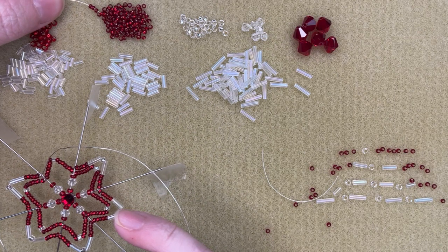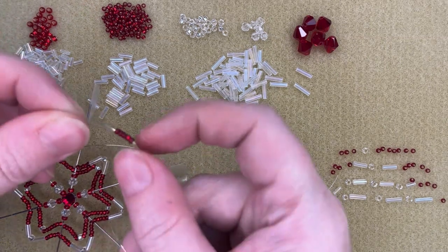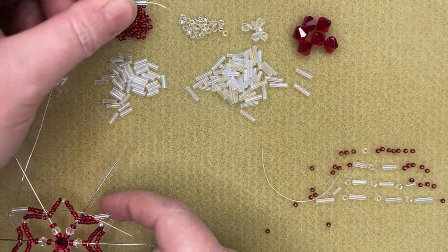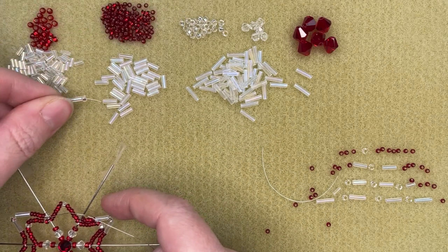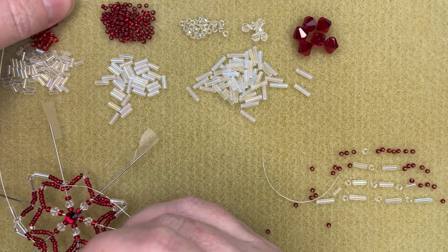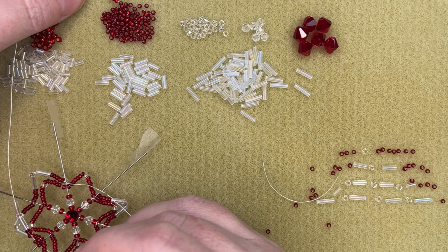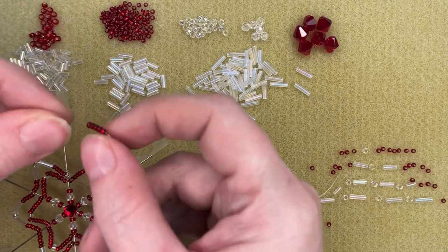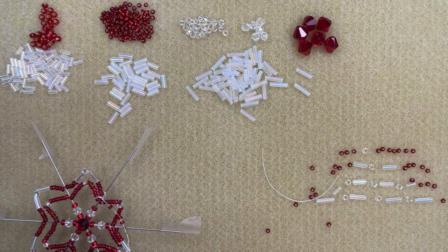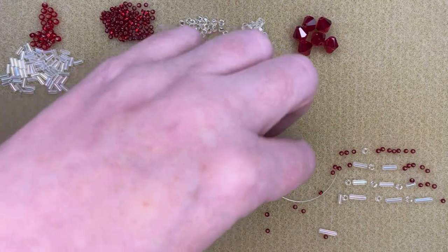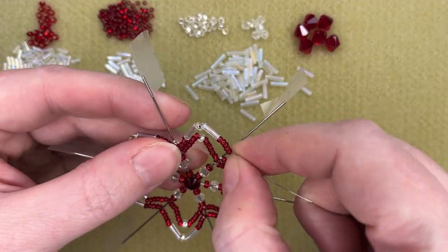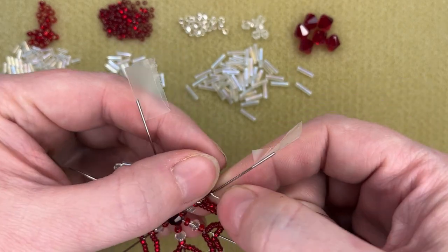So I need five of these, one size three, size eight, size three, and then five more. So for people that aren't real familiar with bugles, size two is the smallest, size three is kind of the most common size, and then a size four is bigger again. So I've got all three out here because we're going to use all three. So here's my last one. That completes row two all the way around.